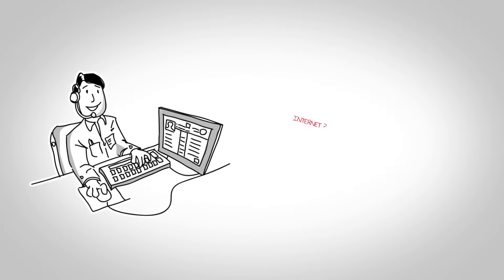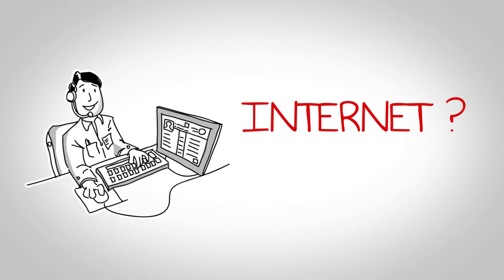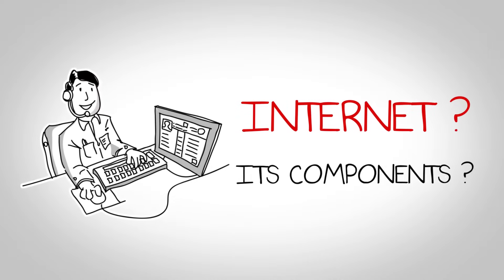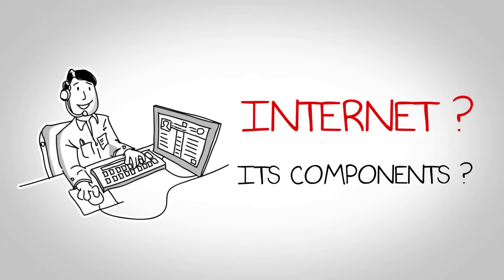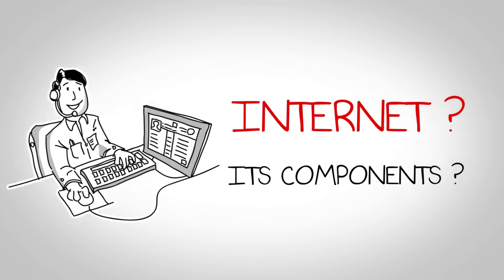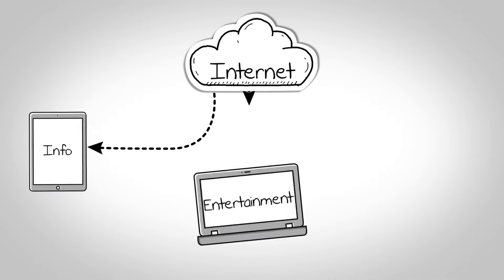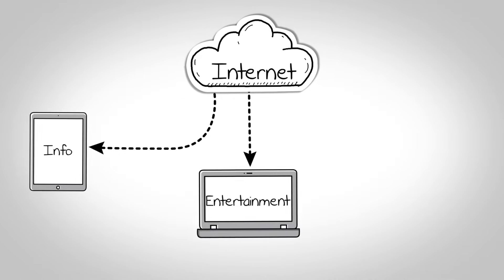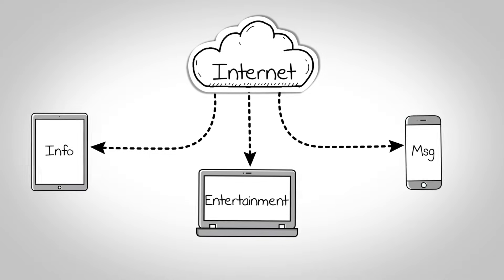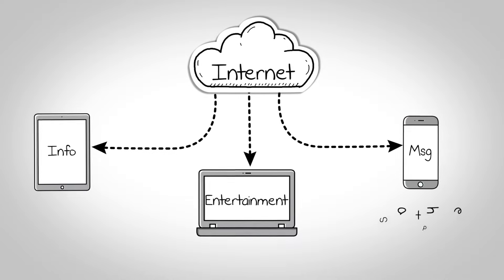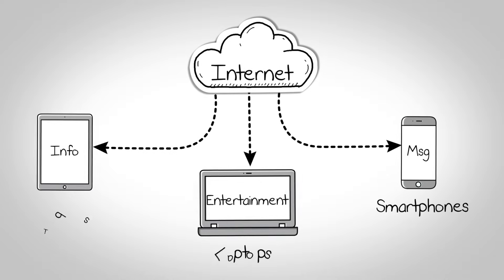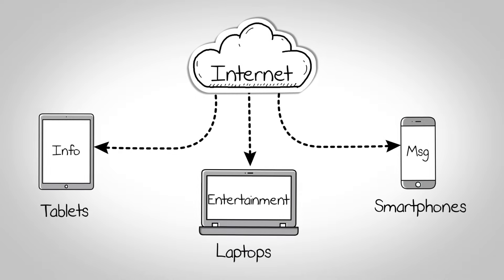Hello everyone. Today we will discuss what is internet and what are its components. Internet is a place where we go for information, entertainment, or to communicate with people using smartphones, laptops, or tablets.